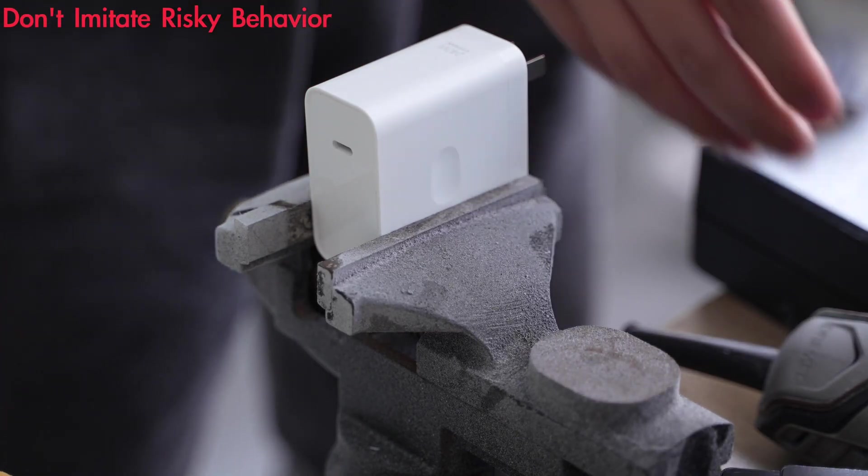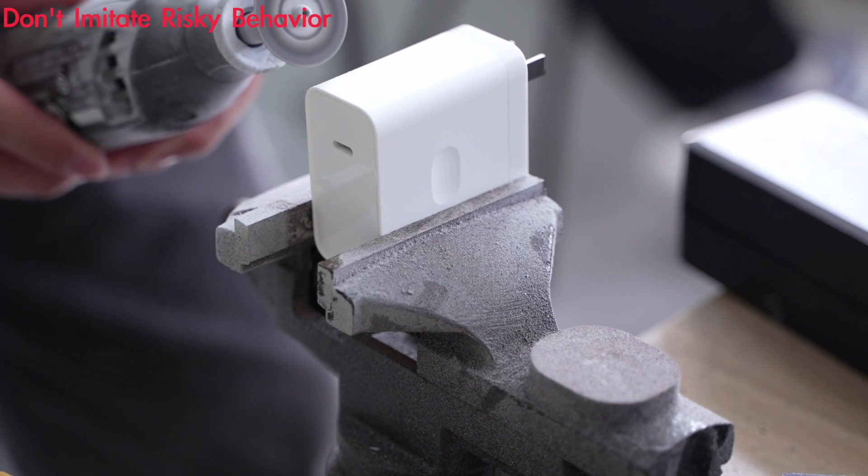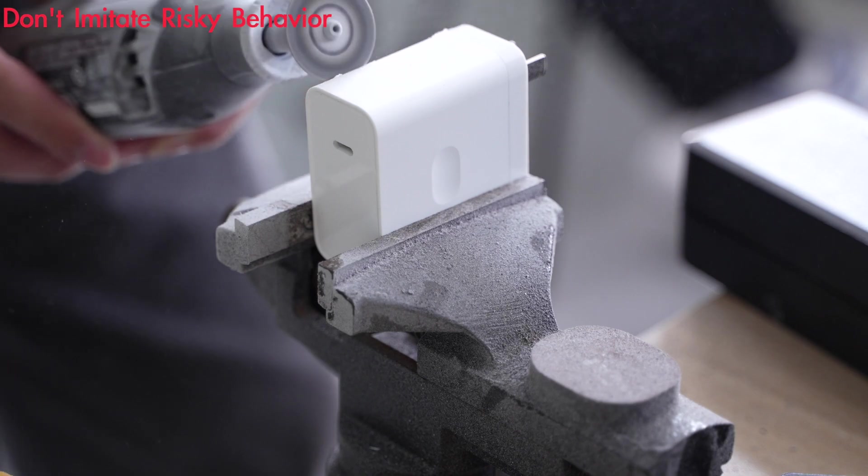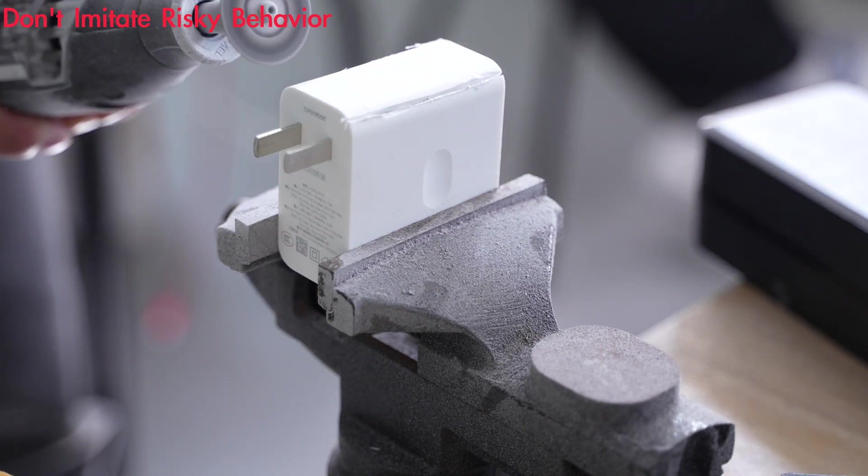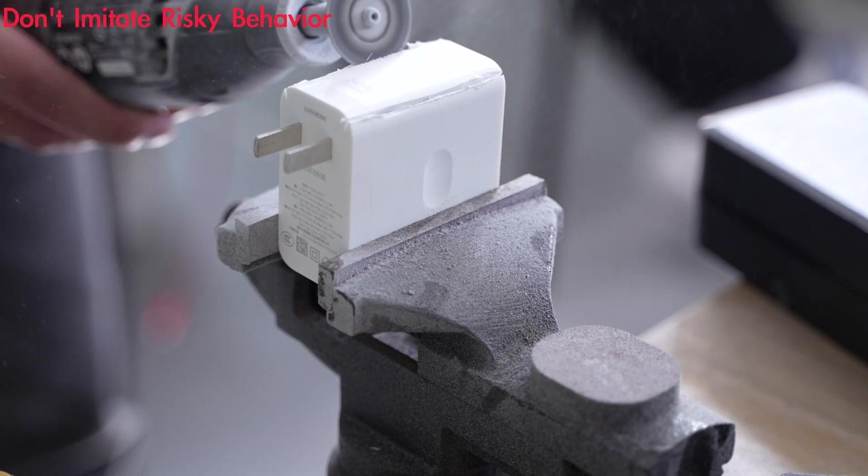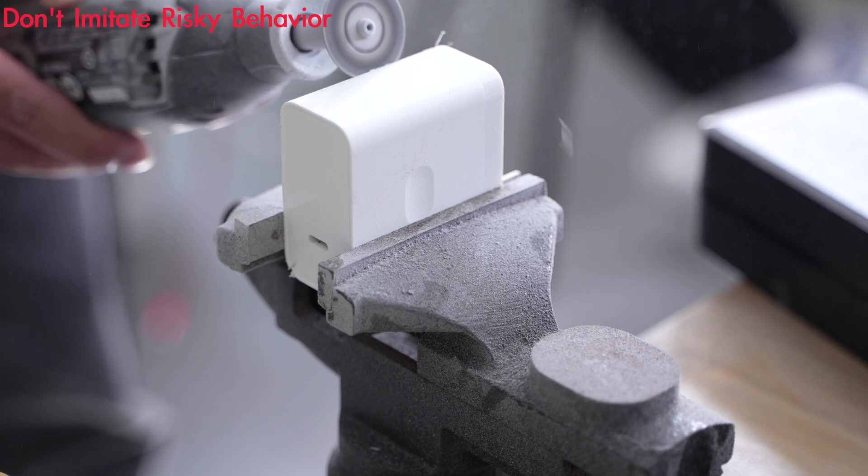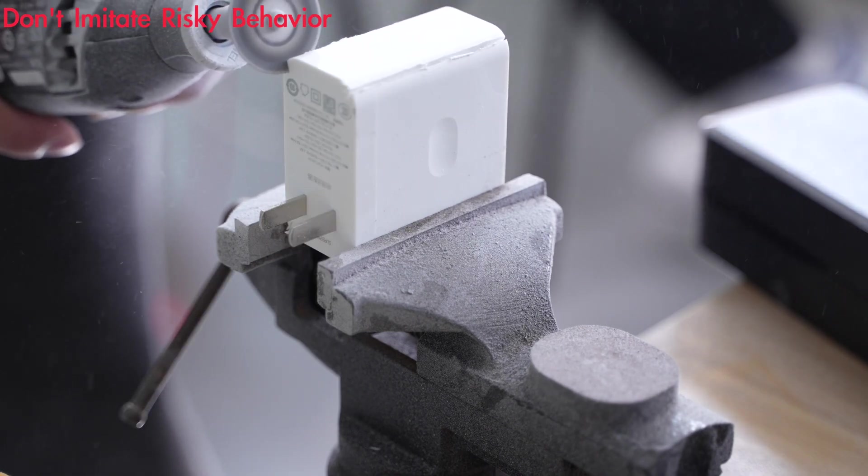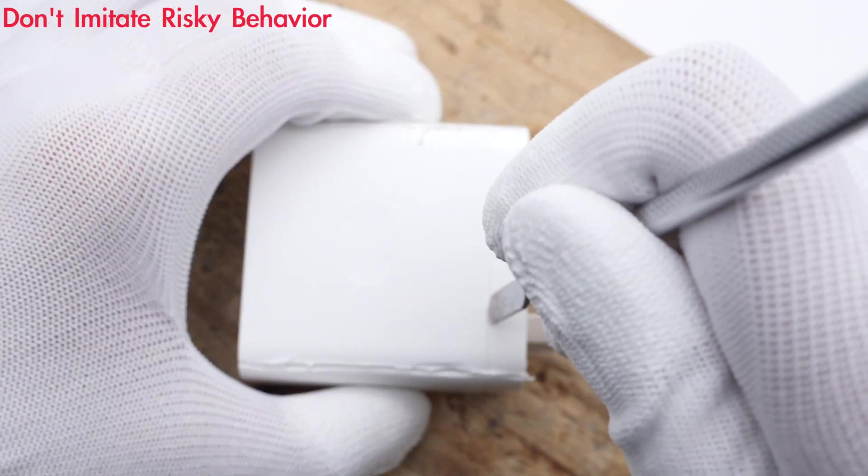Since we've done the charging test, let's continue to take it apart directly. After cutting it off, let's use the spudger to remove the outer plastic.